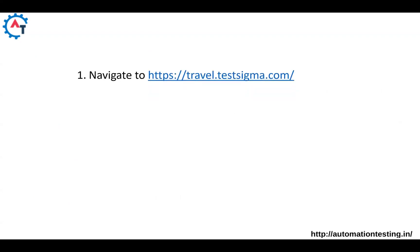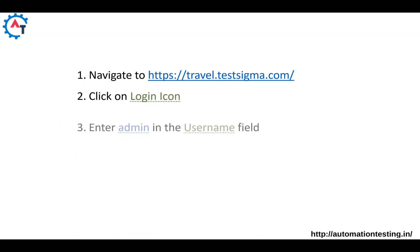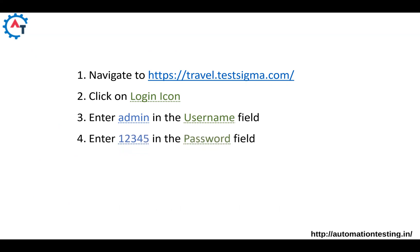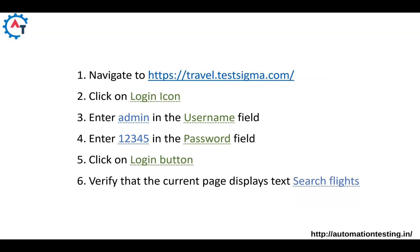Let's see how it looks. Navigate to this URL. Click on login icon. Enter admin in the username field. Enter 12345 in the password field. Click on login button. Verify that the current page displays the text 'search flights.' That's it — this is the automation script. In traditional automation, we need to write so much programming, but here, just in natural language, simple English, you write it and it will execute your automation script. This is how you can easily automate your tasks.